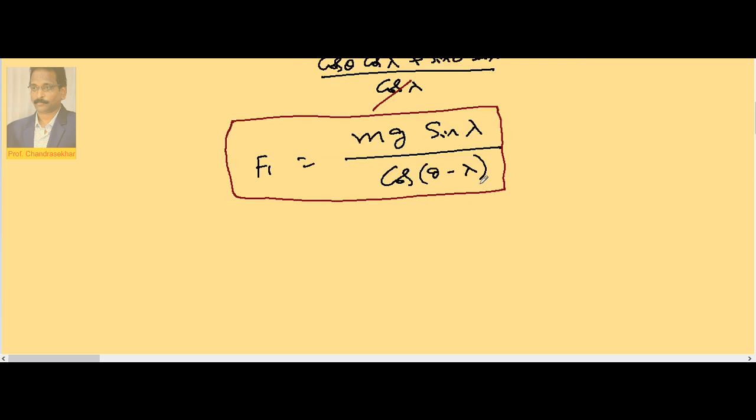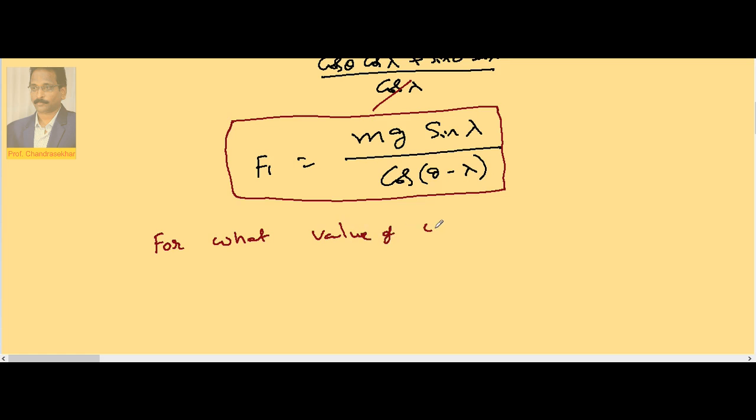Now, for what value of theta, F1 becomes minimum? For what value of theta is F1 minimum?